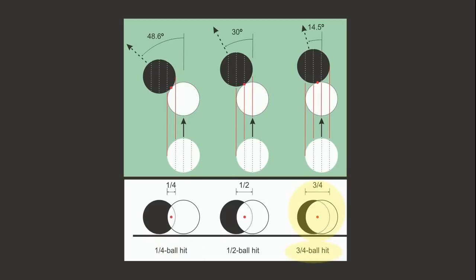With a three-quarter ball hit, the cue ball overlaps three-quarters of the object ball, creating about a 15-degree cut, a relatively full hit. Here, the cue ball is aimed at the outside quarter point of the object ball.